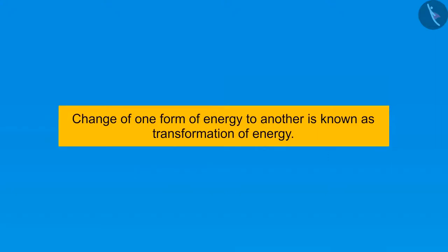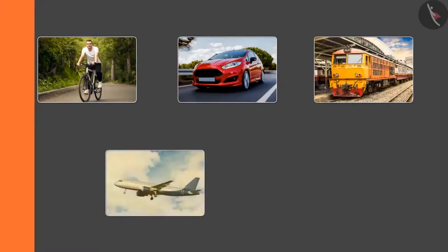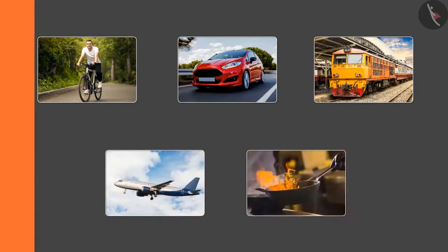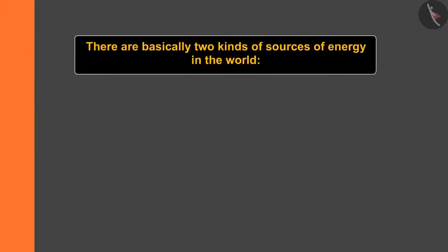Change of one form of energy to another is known as transformation of energy. If we look closely, from a moving bicycle to the moving car, from a moving train to a flying aircraft, from cooking the food to the energy taken from the food, each and everything is an example of transformation of energy.